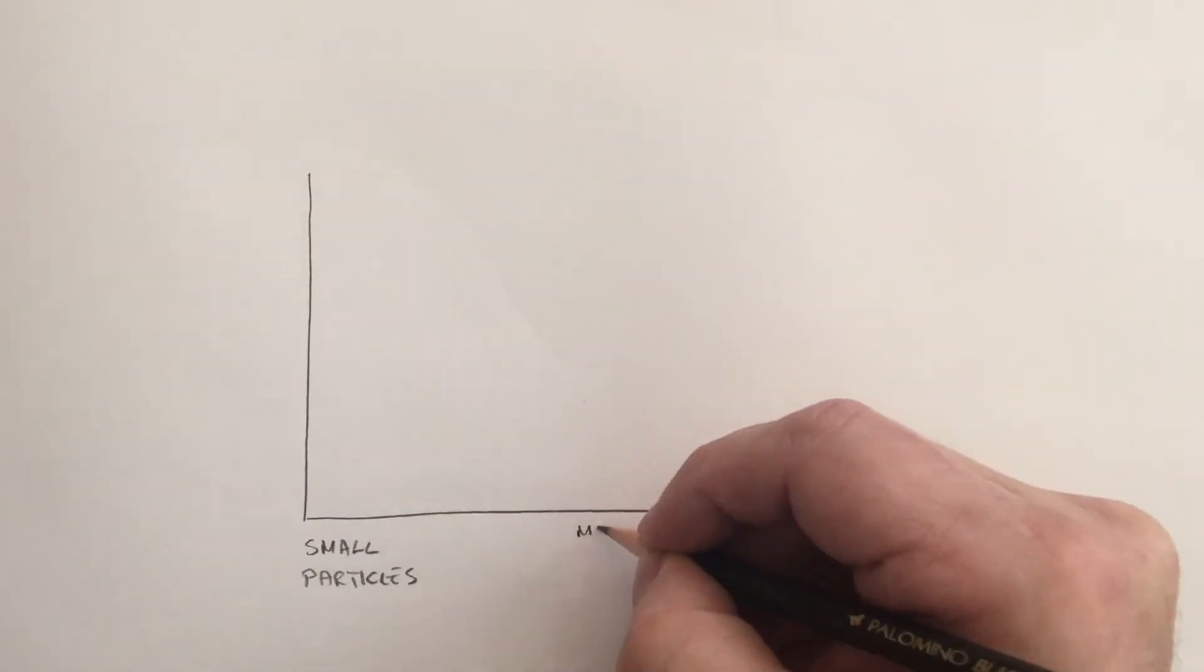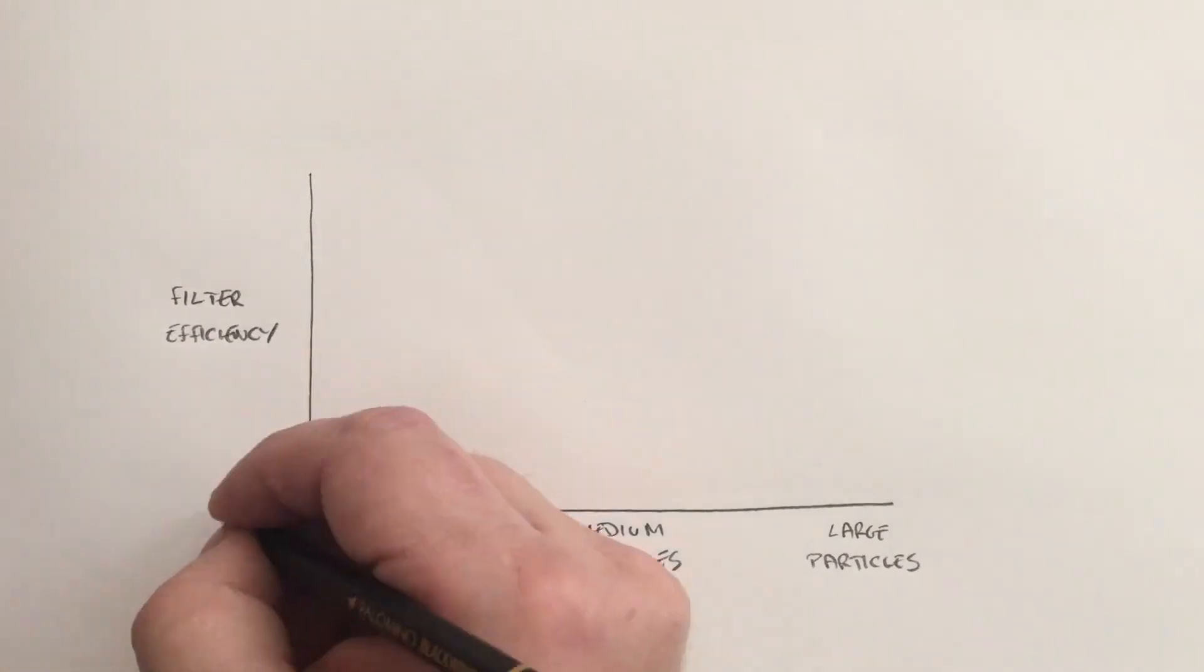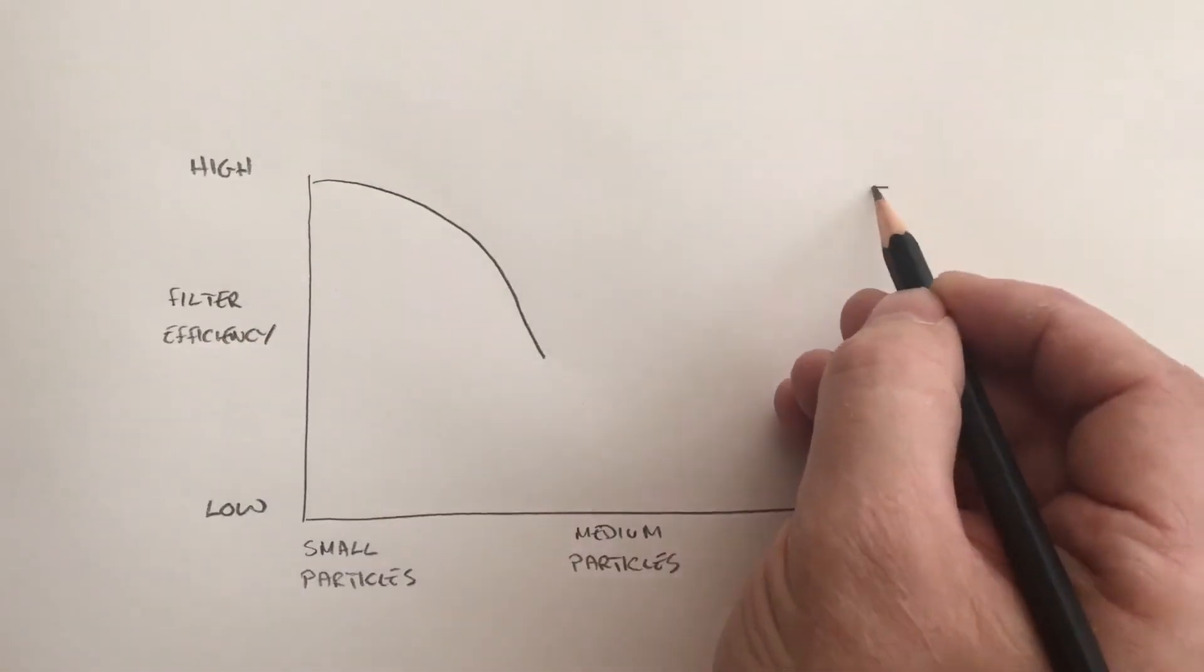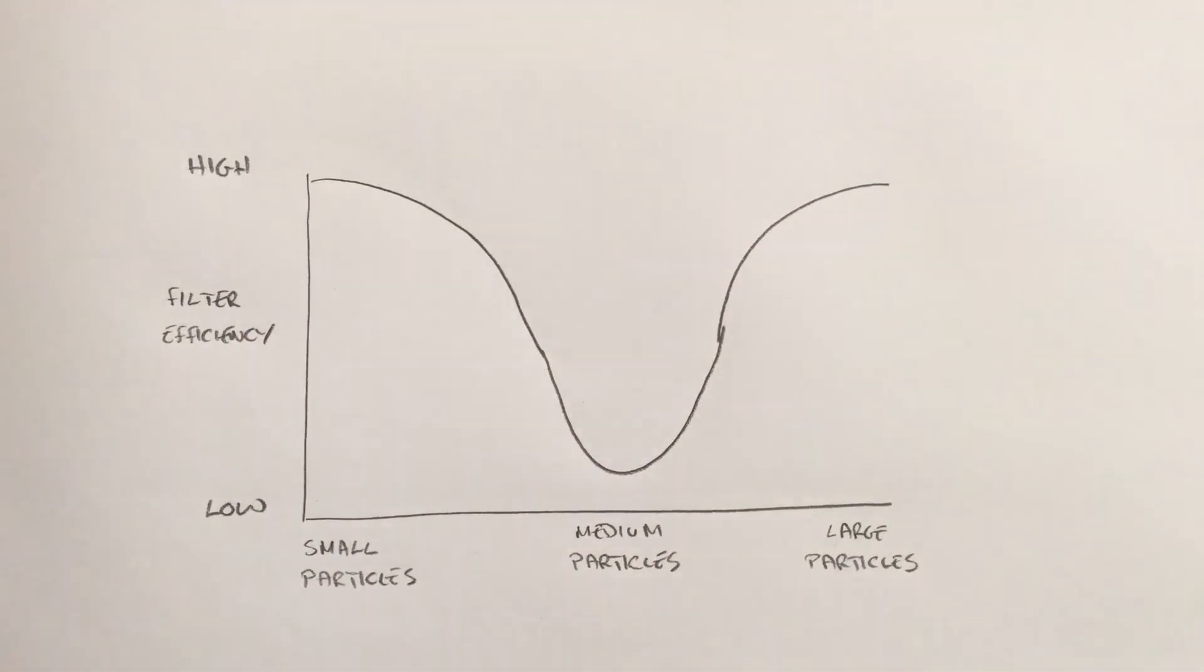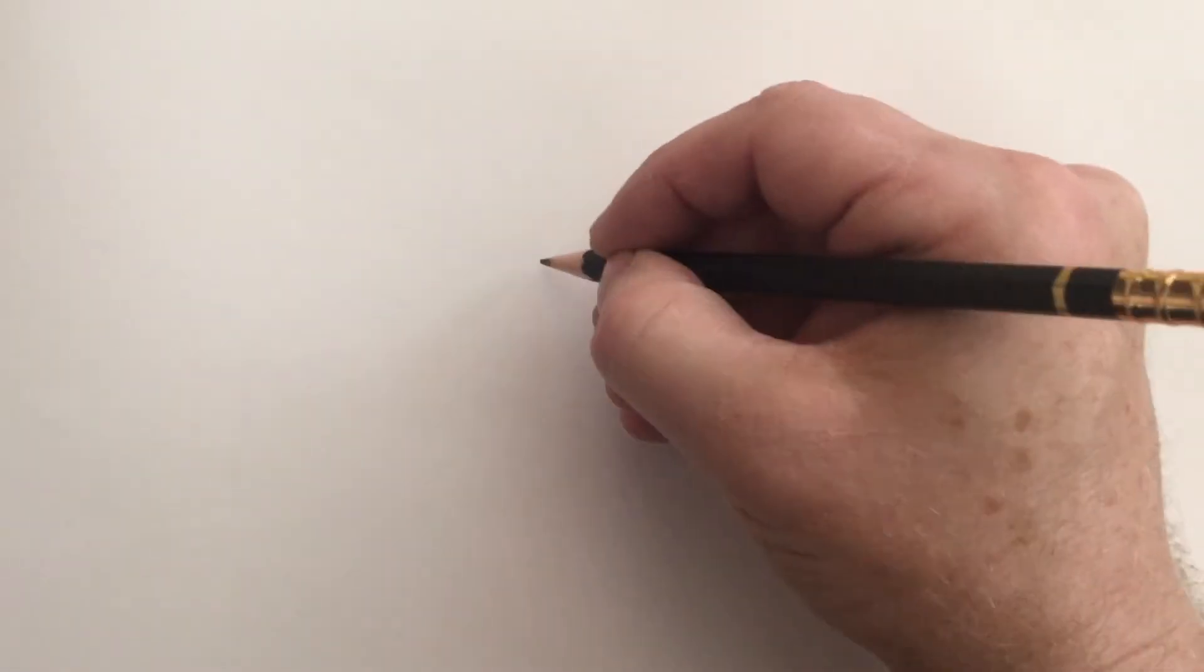So at the end of the day, it's not the smallest airborne particles that are the hardest to filter out, but the medium-sized ones. Those that are too small to be captured through inertia, but too large to be captured through Brownian motion.